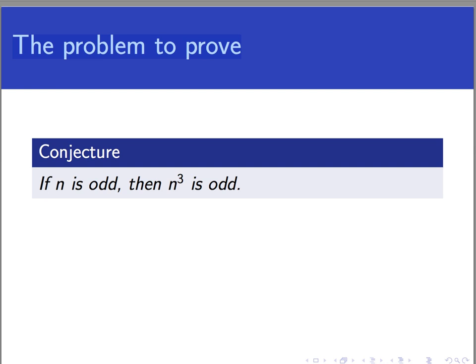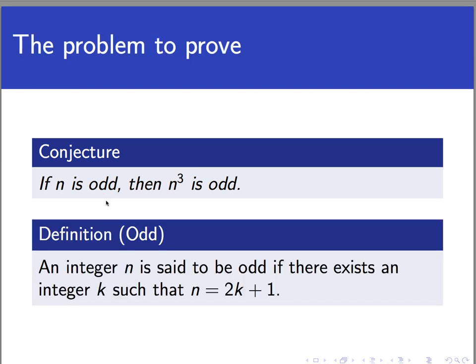First of all, we have to understand what the word odd means, because being able to move forward in a proof presupposes we know what the terms mean. Looking up the definition of the word odd in our textbook, it says that an integer is said to be odd if there exists another integer k such that n equals 2k plus 1.